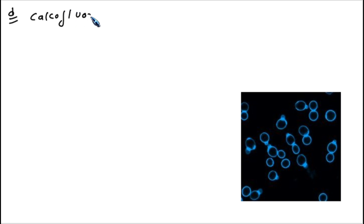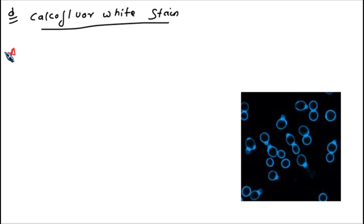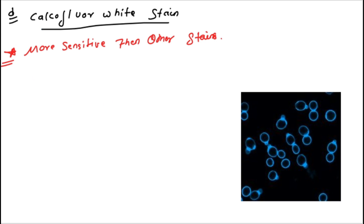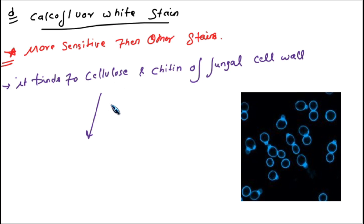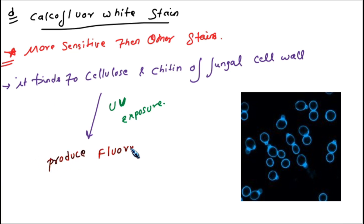The fourth technique in microscopy is Calcofluor White stain. This is the most sensitive stain among all other staining techniques — more sensitive than other stains. This stain binds to cellulose and chitin of the fungal cell wall. On UV light exposure, it produces fluorescence.